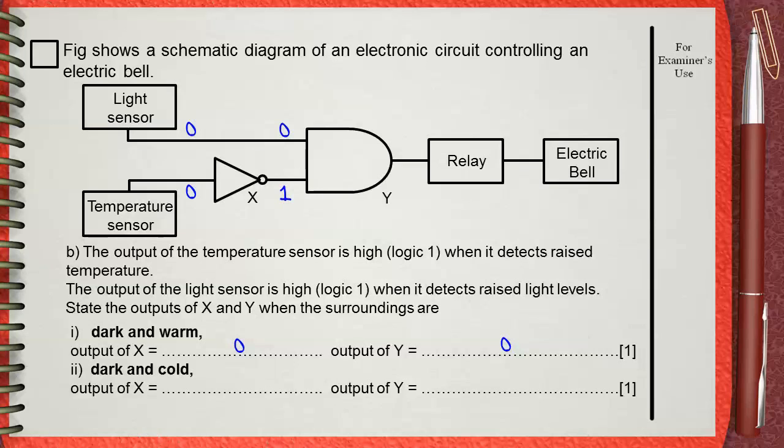Two signals, zero and one, are the inputs of the AND gate Y. This makes the output of Y be zero. If zero and one are fed to an AND gate, the output will be zero. In this case also the relay will not work and the electric bell is off.